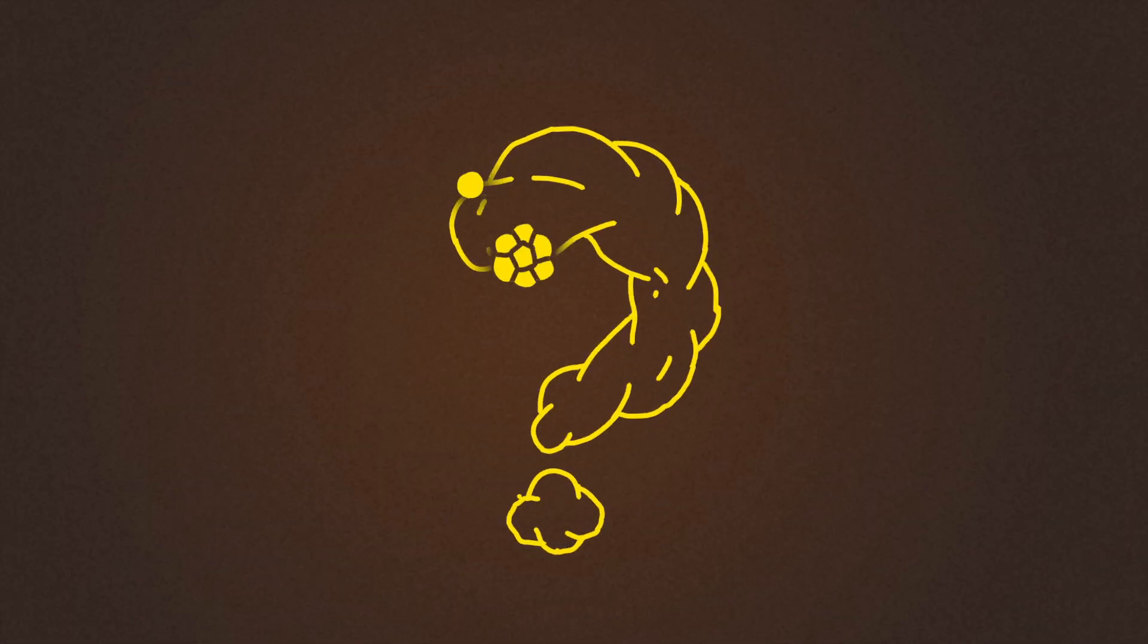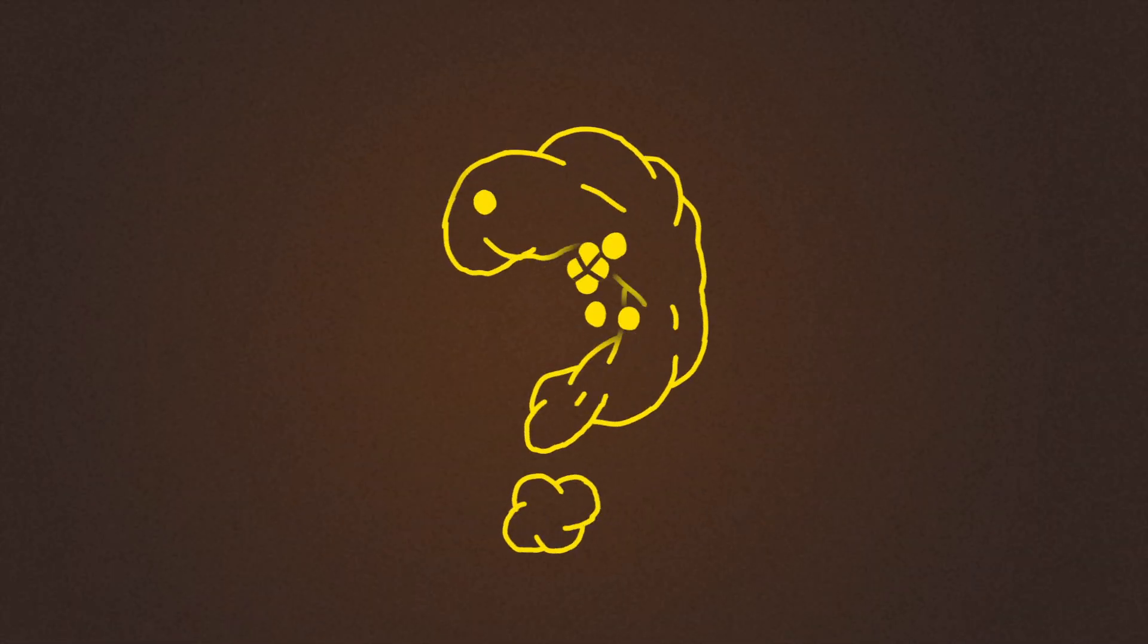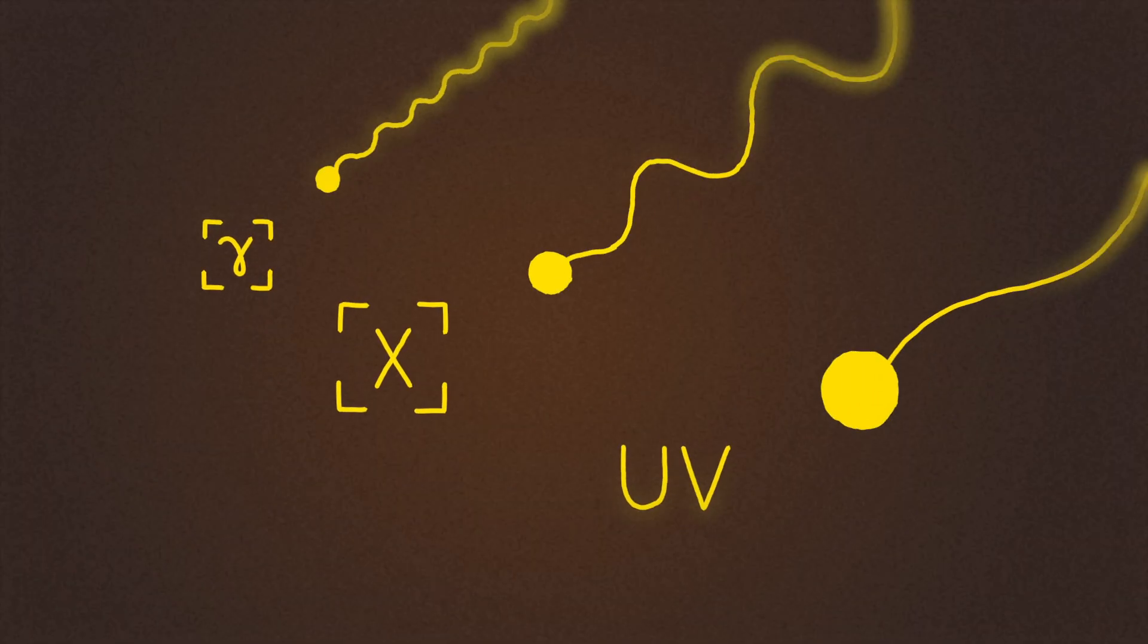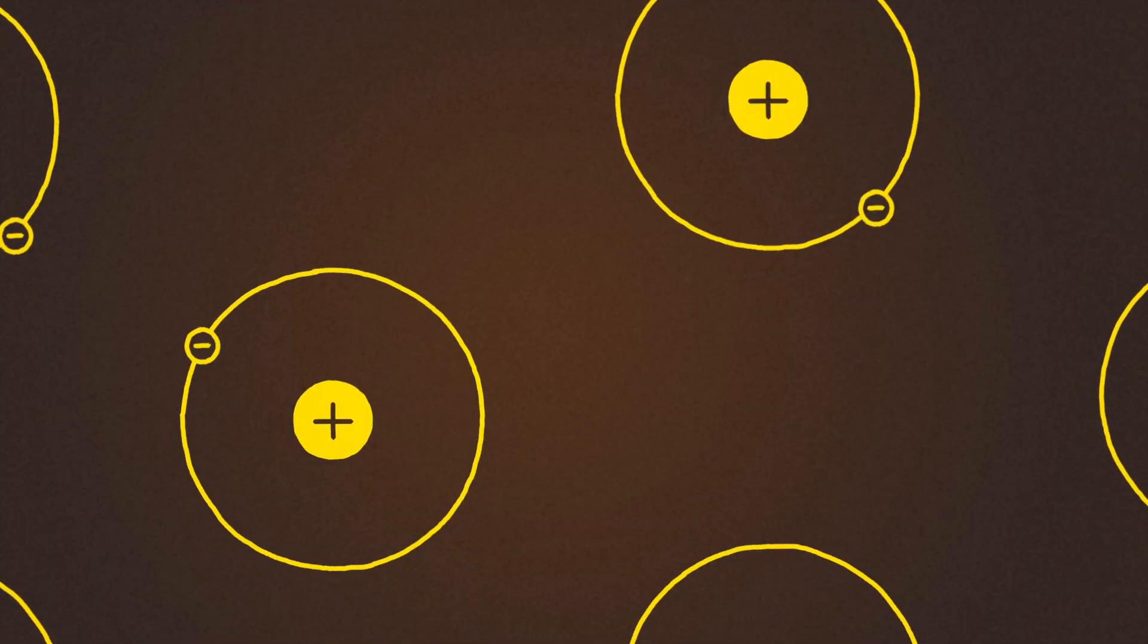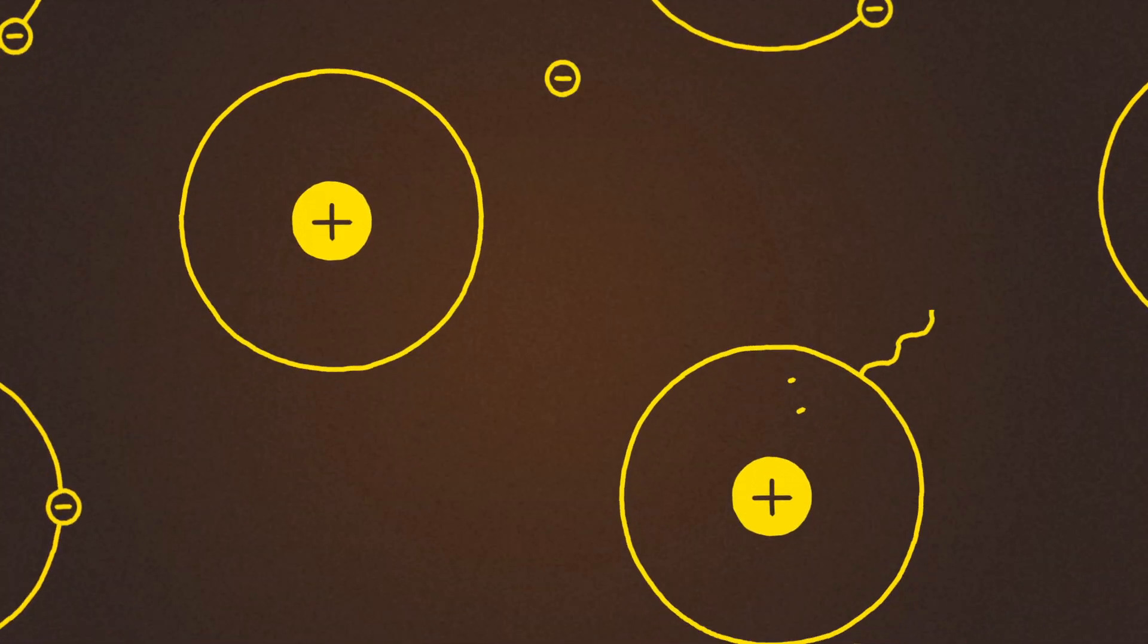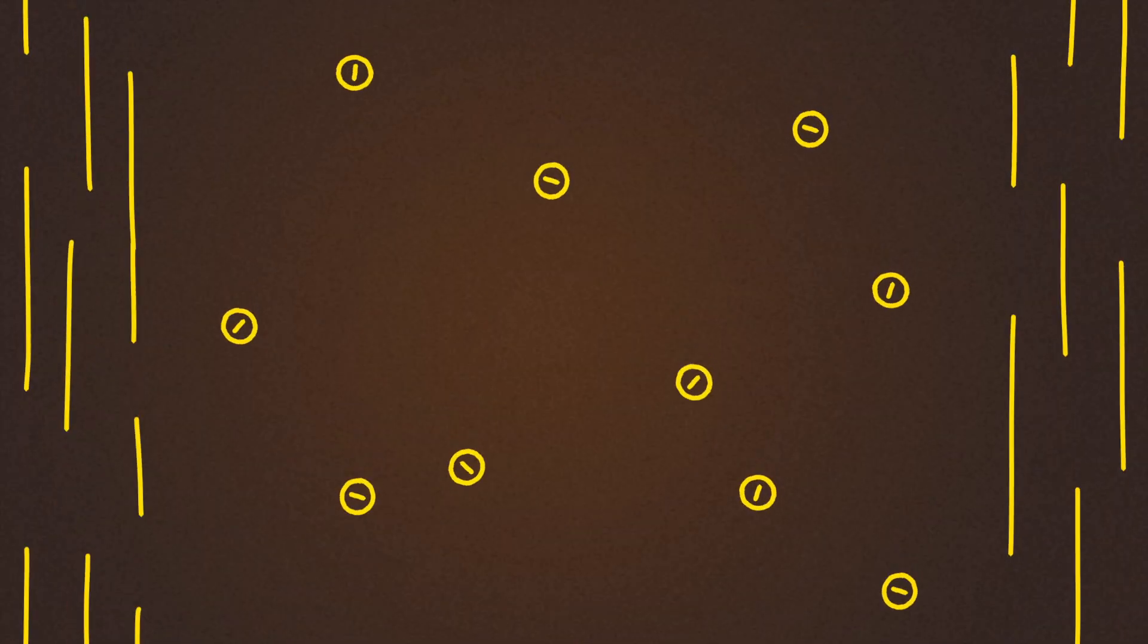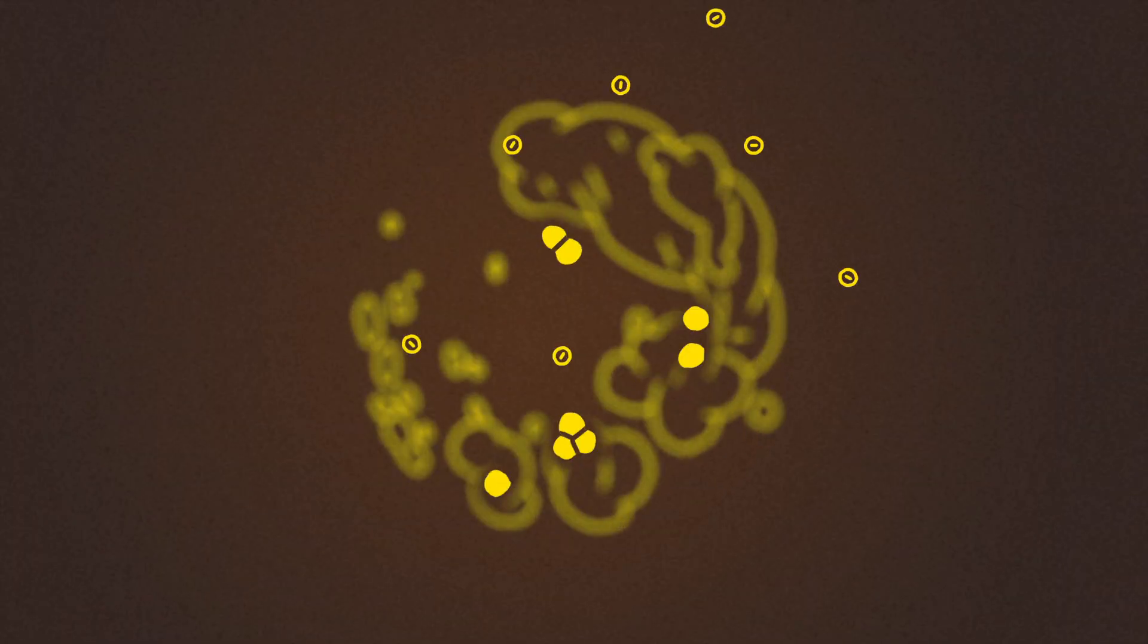One theory looks to electrostatic charge to answer this. Energetic gamma rays, X-rays, and UV photons knock electrons off of gas atoms within the disk, creating positive ions and negative electrons. Electrons run into and stick to dust, making it negatively charged.